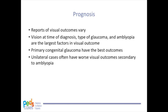Reports of visual outcomes vary. Vision at the time of diagnosis, type of glaucoma, and presence of amblyopia are the biggest factors in determining visual outcomes. Children with primary congenital glaucoma have the best prognosis, whereas patients with unilateral glaucoma often have worse visual outcomes secondary to amblyopia.